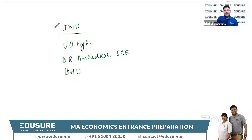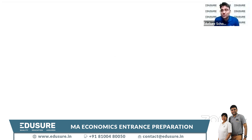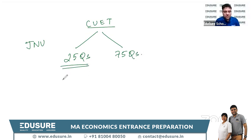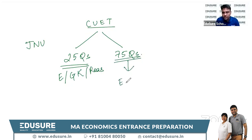For those targeting JNU through CUET, here is what you need to know. CUET has two parts: one part which has 25 questions, and the other part which has 75 questions. The 25 questions are basically English, GK, and reasoning questions.